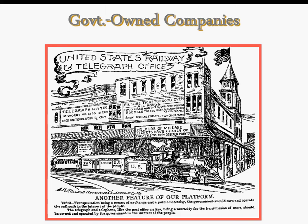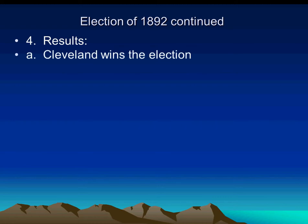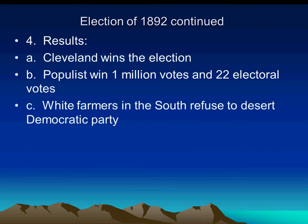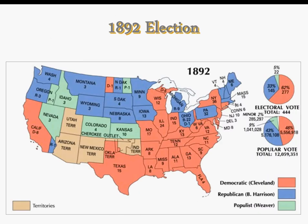This picture shows a cartoon suggesting that the government take over some of the businesses — railroads and telegraph and so forth. The results of the election: Cleveland wins. It is significant to note that the Populist Party received a million votes and 22 electoral votes, but they don't put anybody into the White House. White farmers in the South refused to support the Populist Party, and this is going to hurt them. You can see that Cleveland, who is a Democrat, is going to carry the day.